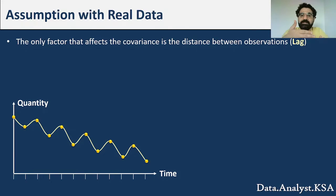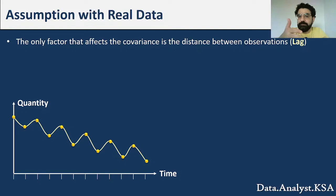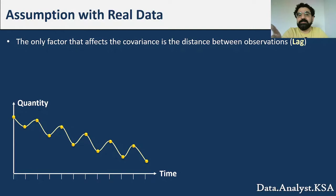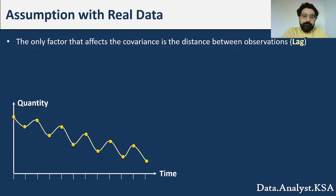The only factor affecting the covariance is the distance between observations, not where the observations are. For example, the covariance of observations 1 and 5 equals the covariance of 2 and 6, equals the covariance of 3 and 7, because the distance between them is the same.